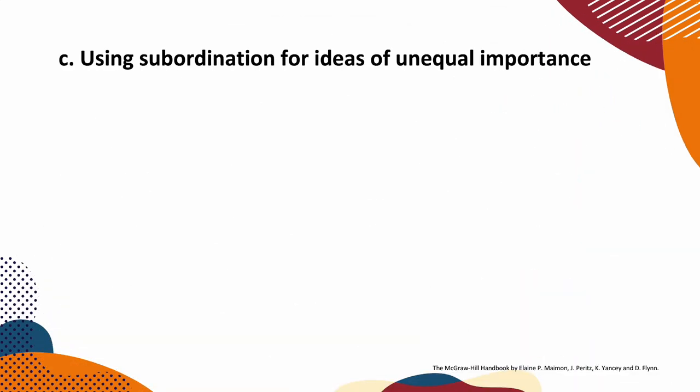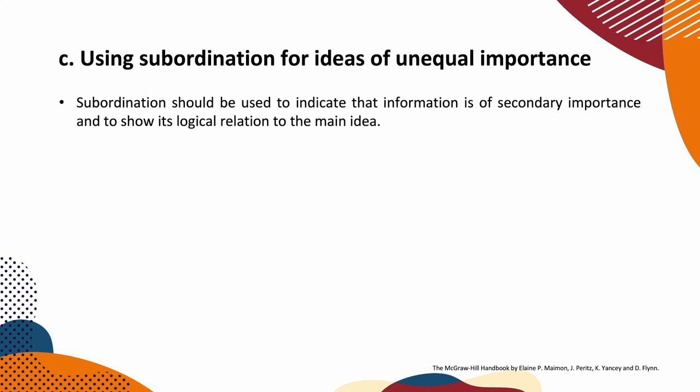Using subordination for ideas of unequal importance: subordination should be used to indicate that information is of secondary importance and to show its logical relation to the main idea. For example: 'The police arrived and the burglars ran away.' That is correct, but it's better to add a subordinating conjunction like WHEN: 'When the police arrived, the burglars ran away.' The main clause is 'the burglars ran away' and the secondary clause is 'when the police arrived.' You could also write: 'The burglars ran away when the police arrived.'